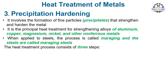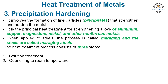The heat treatment process for precipitation hardening consists of three steps: one, solution treatment, in which the alloy is heated to a high temperature to dissolve the alloying elements into a solid solution; two, quenching to room temperature to create a supersaturated solid solution; and three, precipitation treatment, in which the alloy is reheated to a lower temperature to cause precipitation of fine particles. This third step is called aging, and for this reason, the whole heat treatment is sometimes called age hardening.